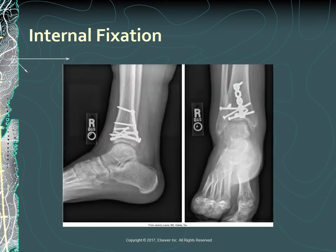Internal fixation devices—pins, plates, rods, and screws—are surgically inserted to realign and maintain position of bony fragments. These metal devices are biologically inert and made from stainless steel or titanium. Proper alignment and bone healing are evaluated regularly by x-rays.